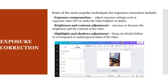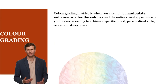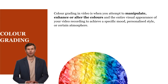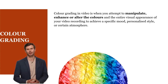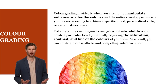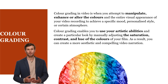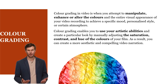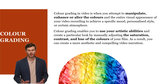Highlights and shadows adjustment allows you to bring out details hidden in overexposed or underexposed shots. Color grading in video is when you manipulate, enhance, or alter the colors and the entire visual appearance of your recording in order to achieve a specific mood, personalized style, or certain atmosphere. Color grading enables you to use your artistic abilities and create a particular look by manually adjusting the saturation, contrast, and hue of your film.